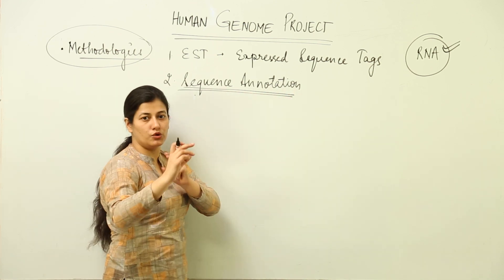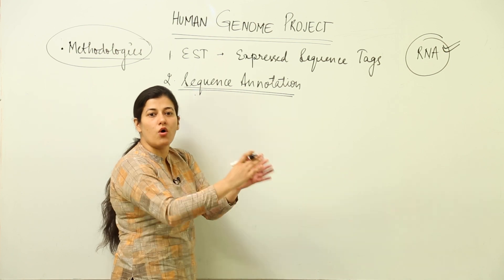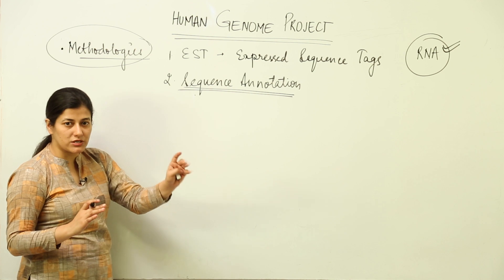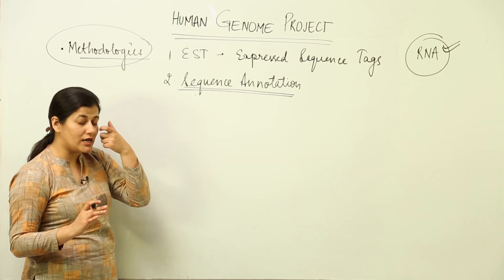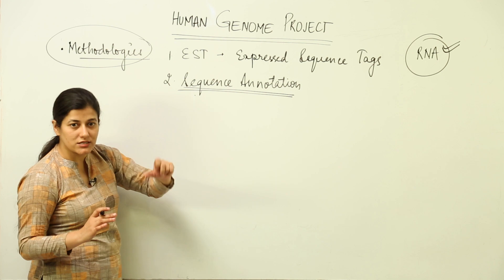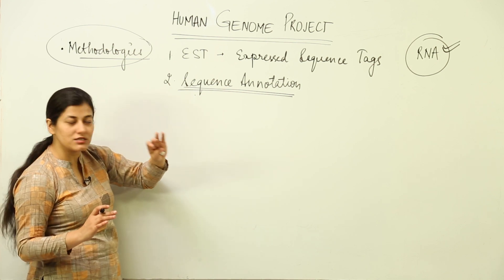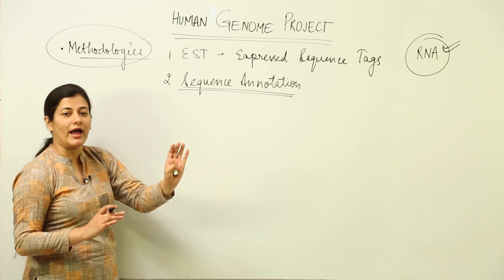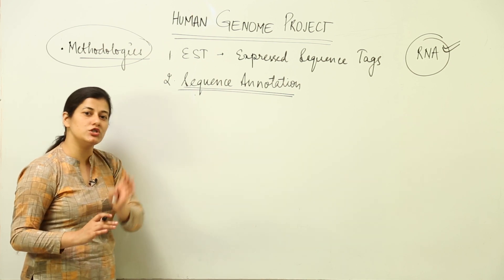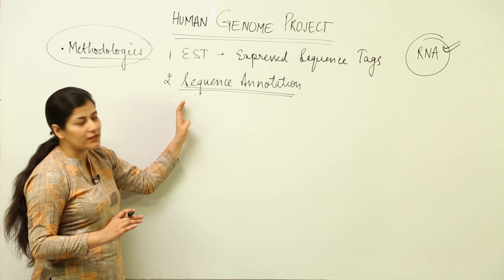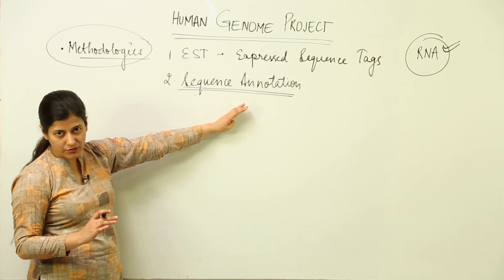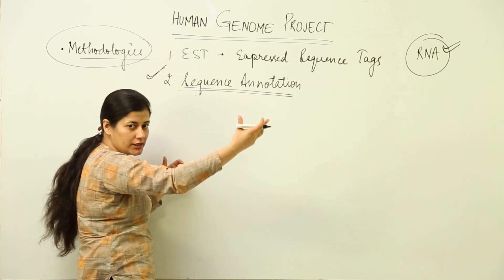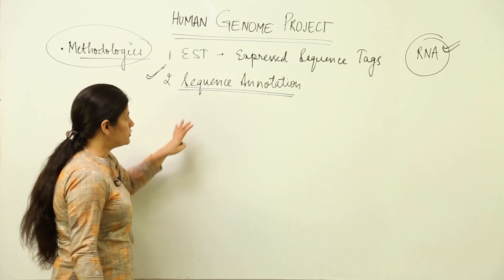The second methodology is sequence annotation. This methodology aims at coding the entire genome, whether expressed or not expressed. All 3.3 billion base pairs would be identified — the nucleotide sequences, the base pair sequences present for the entire genome, irrespective of which parts are being expressed and which are not.